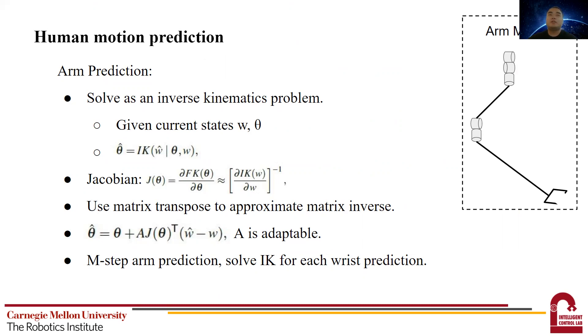The inverse kinematics solves for the desired joint space configuration hat theta, where we know the desired end effector pose hat W, and the current configuration's theta and W. The typical IK can be solved using this equation. We added an A matrix to encode the individual differences in joint velocities, and note that this A matrix is adaptable. So for M step arm prediction, we solve IK for each wrist prediction.